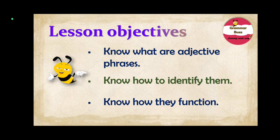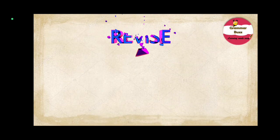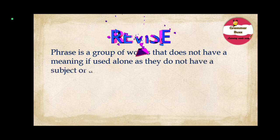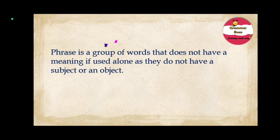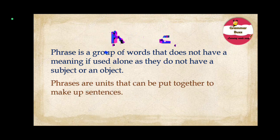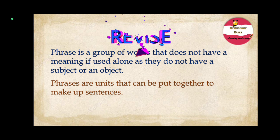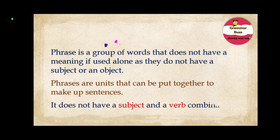So make sure you watch this video till the end. Before we start, let us quickly revise what we have already learned in our previous video. Do you remember what a phrase is? A phrase is a group of words that does not have a meaning if used alone, as they do not have a subject or an object. Phrases are units that can be put together to make up sentences, and a phrase does not have a subject and a verb combination.